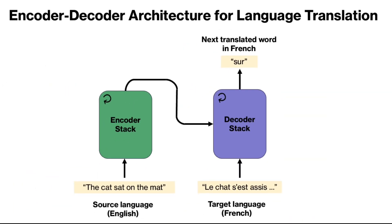As a quick recap, the original transformer was proposed in the 'Attention Is All You Need' paper for sequence-to-sequence translation tasks such as language translation from a source language to a target language. For example, we feed an English sentence as source and as output we get the translated sequence in French as target language. The complete English sentence is fed to the encoder and as output of the encoder we get the context representation of the English sentence. Then we feed the partially complete French sentence in an autoregressive fashion to the decoder, which will predict the next word in French.